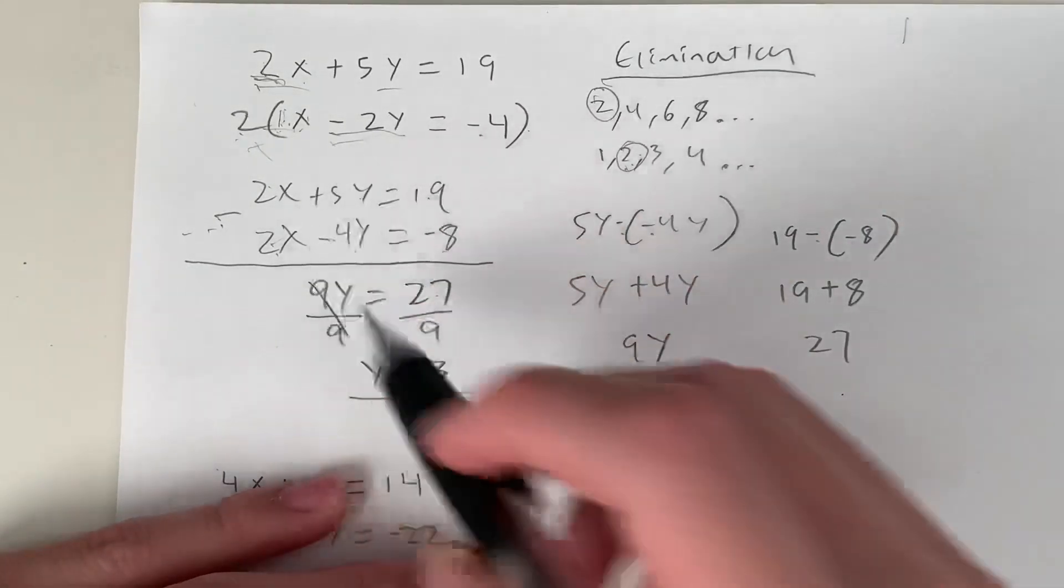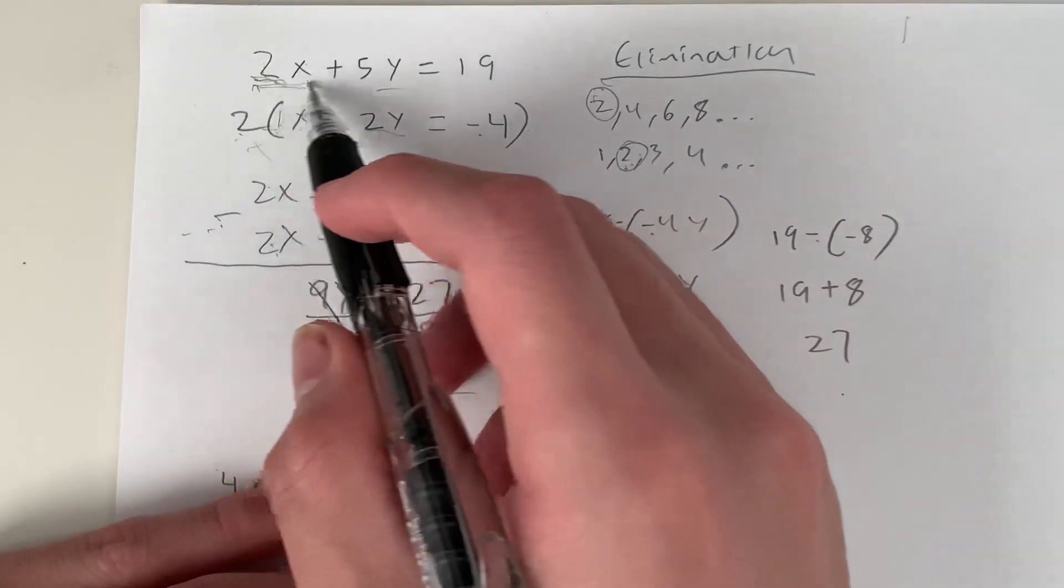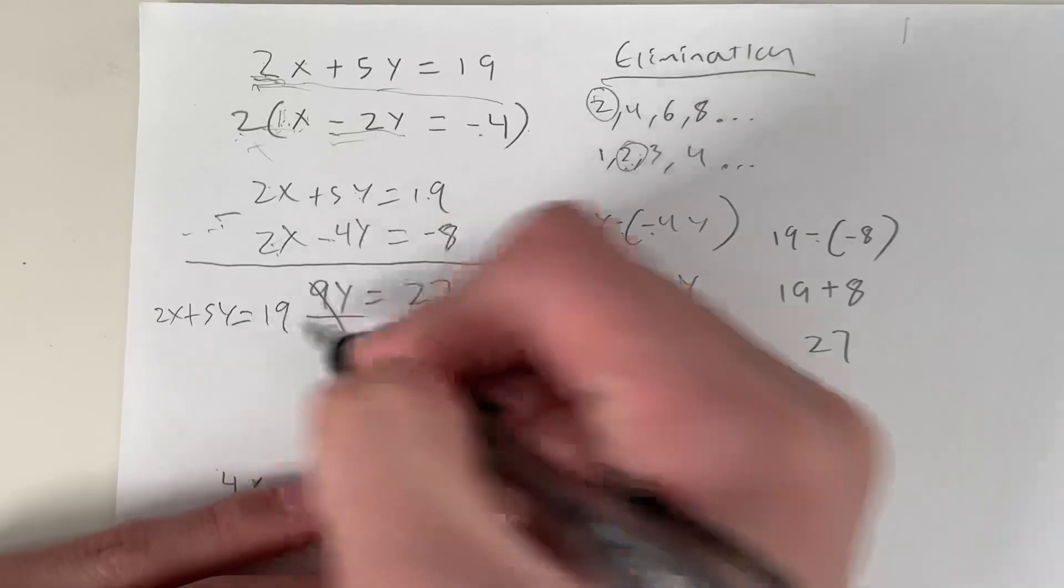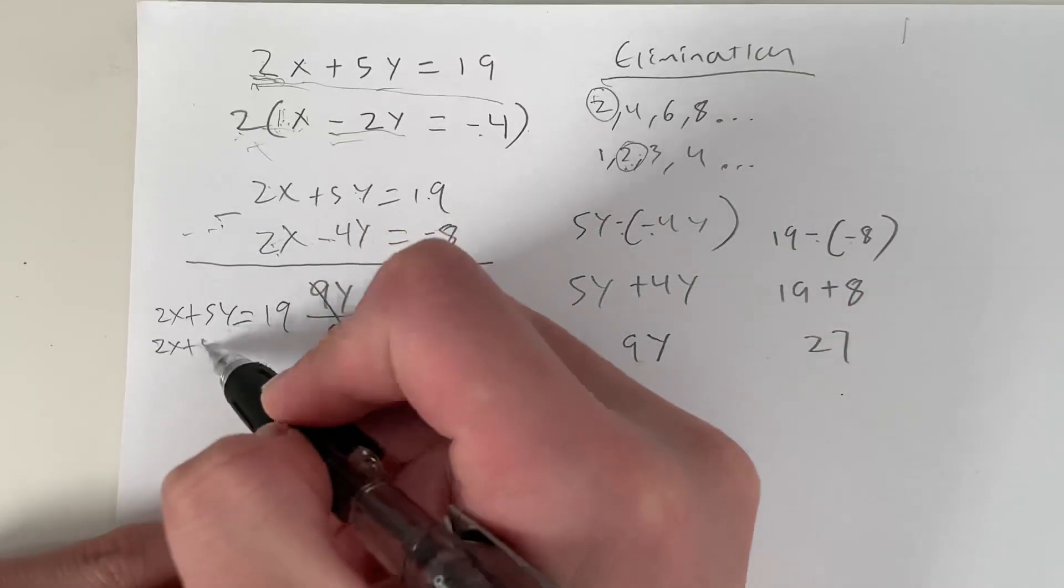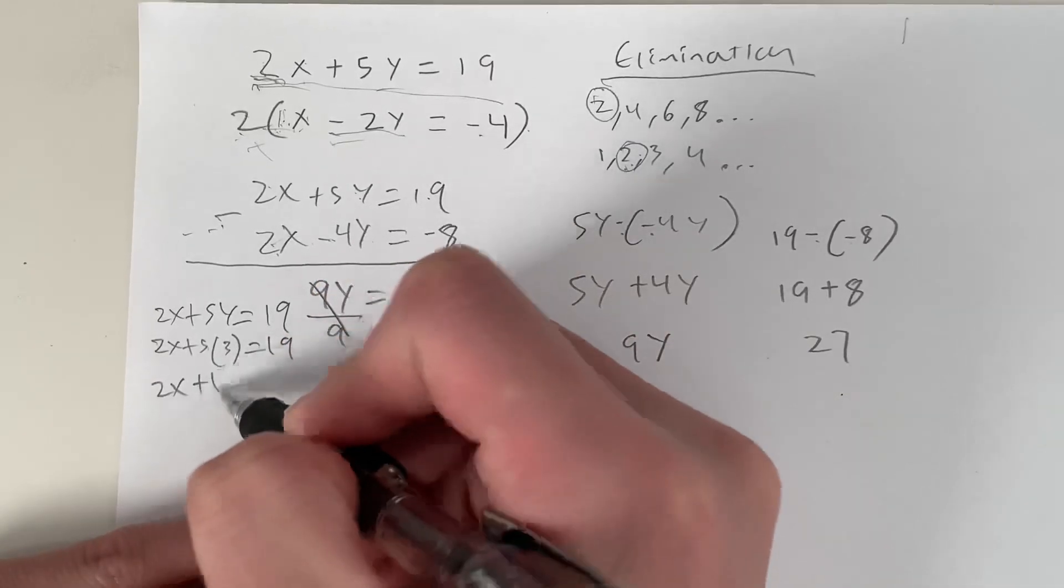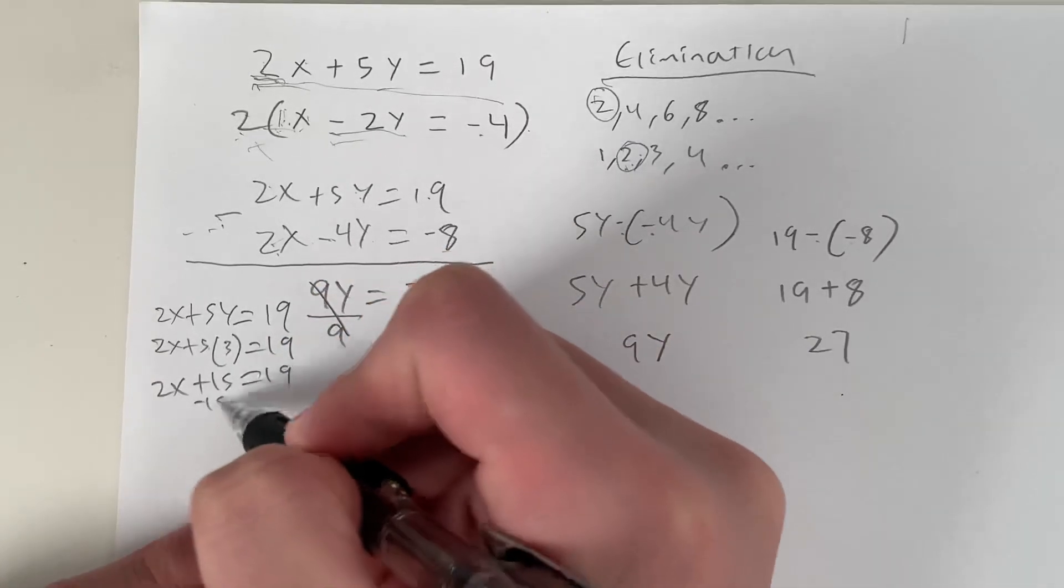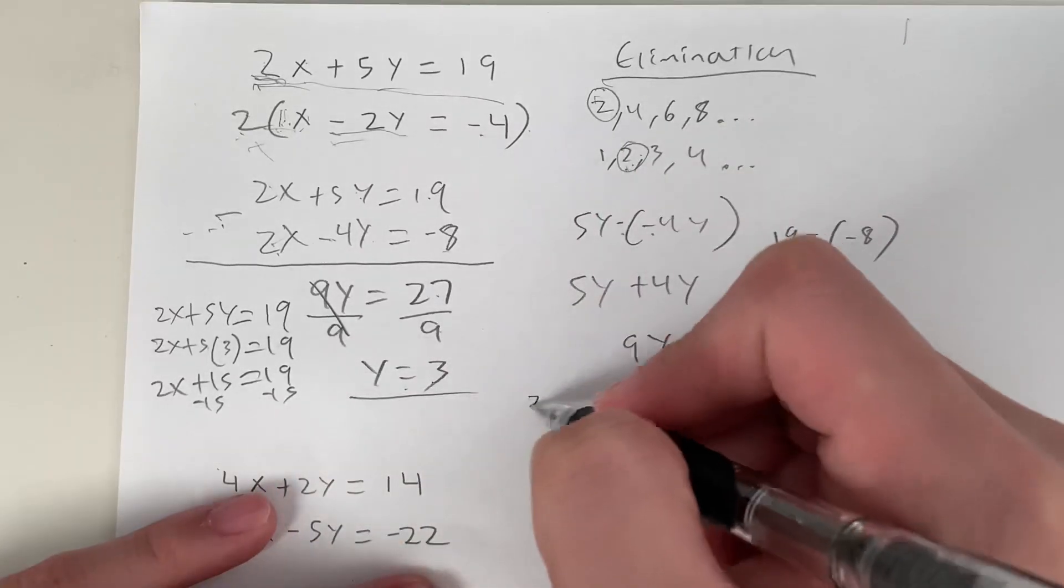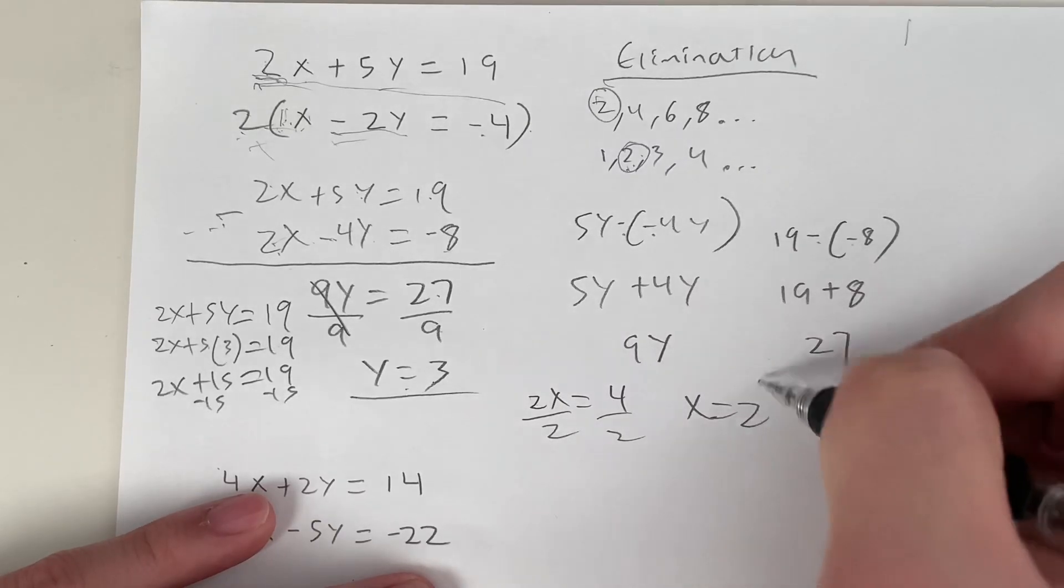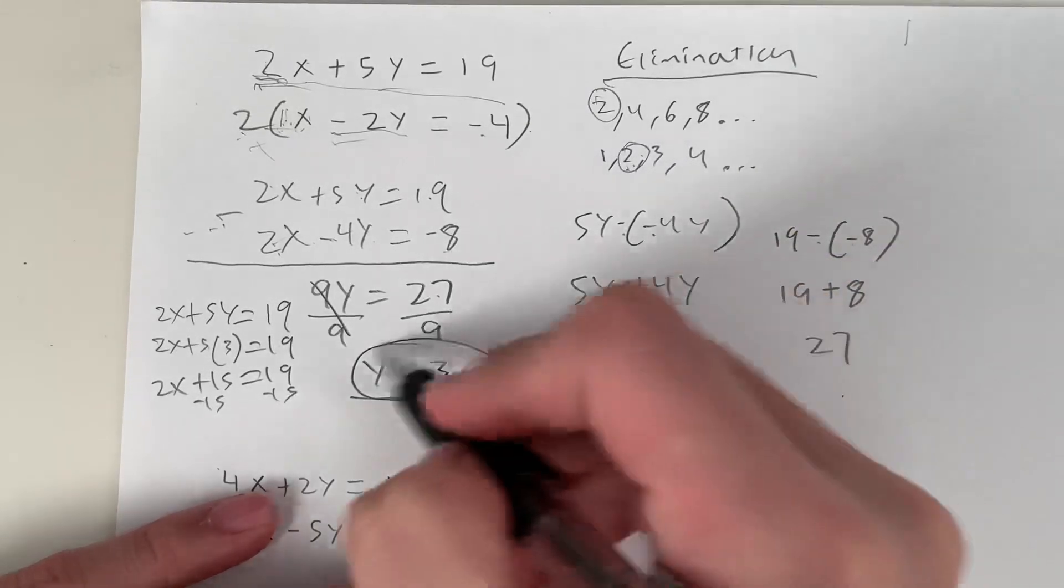Now how do we find x? All we have to do is plug it back in. So let's use this equation right here. We have 2x plus 5y equals 19. We plug in the value of y for 3. 2x plus 5 times 3 equals 19. 2x plus 15 equals 19. Subtract 15 on both sides, giving us 2x equals 4. Divide both sides by 2, giving you x equals 2. And y equals 3. So that's how you solve systems equation using elimination.